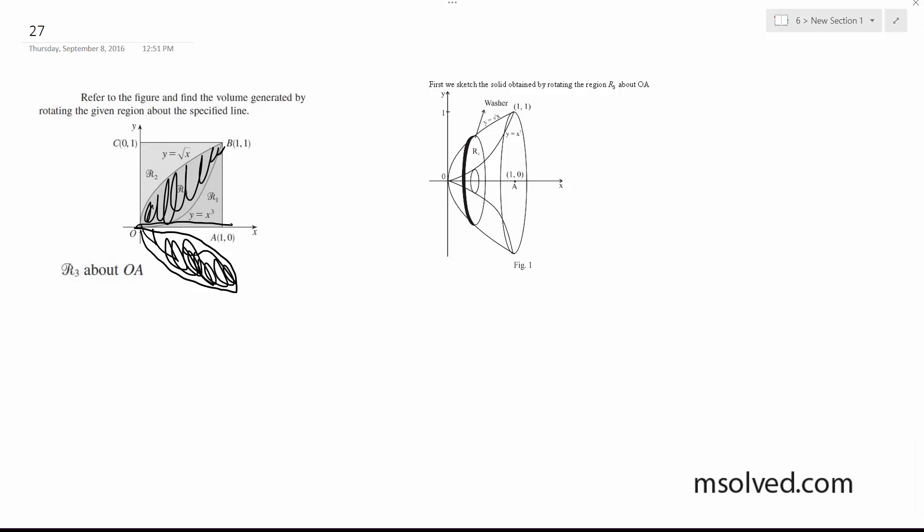Okay, so using the washer method, the initial setup with the area for rotating this is π(√x)² minus π(x³)². Simplified, A(x) equals π(x - x⁶). Okay.